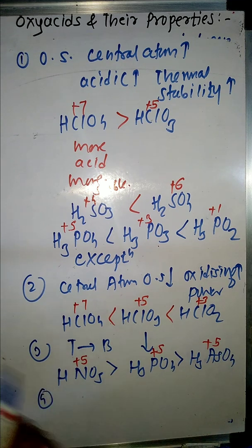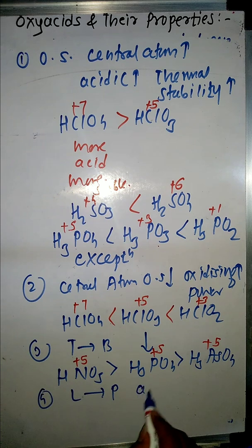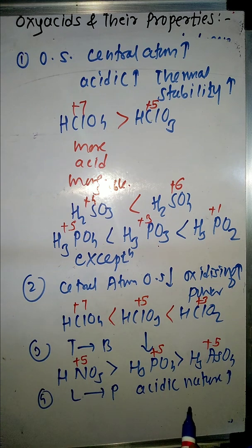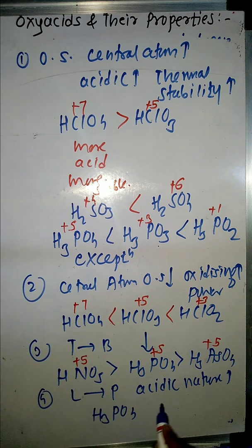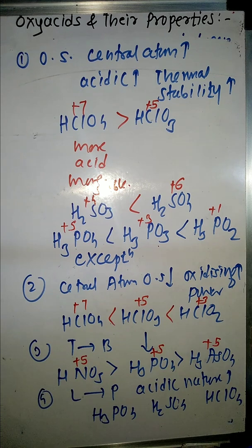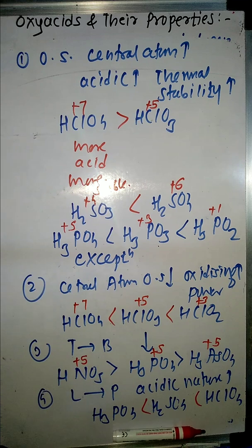Property 4: On moving from left to right in the periodic table, the acidic nature always increases. The reason is that non-metallic character and electronegativity increase from left to right, so acidic character also increases. For example, H3PO4, H2SO4, and HClO4 — phosphorus, sulfur, and chlorine belong to the same period, but chlorine is on the right and phosphorus on the left. So HClO4 is more acidic than H2SO4, which is more acidic than H3PO4. Thank you, take care, have a nice time.